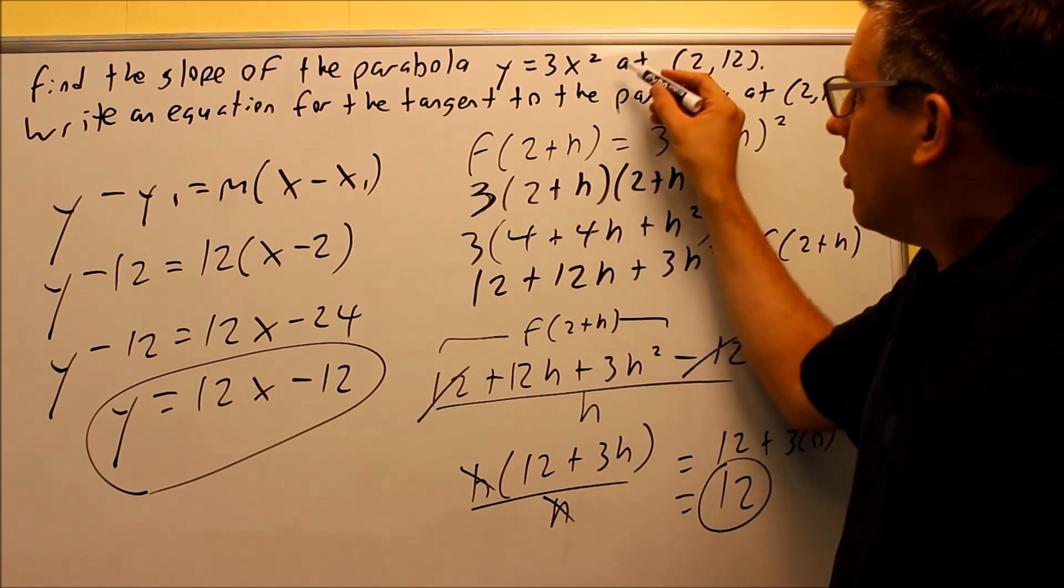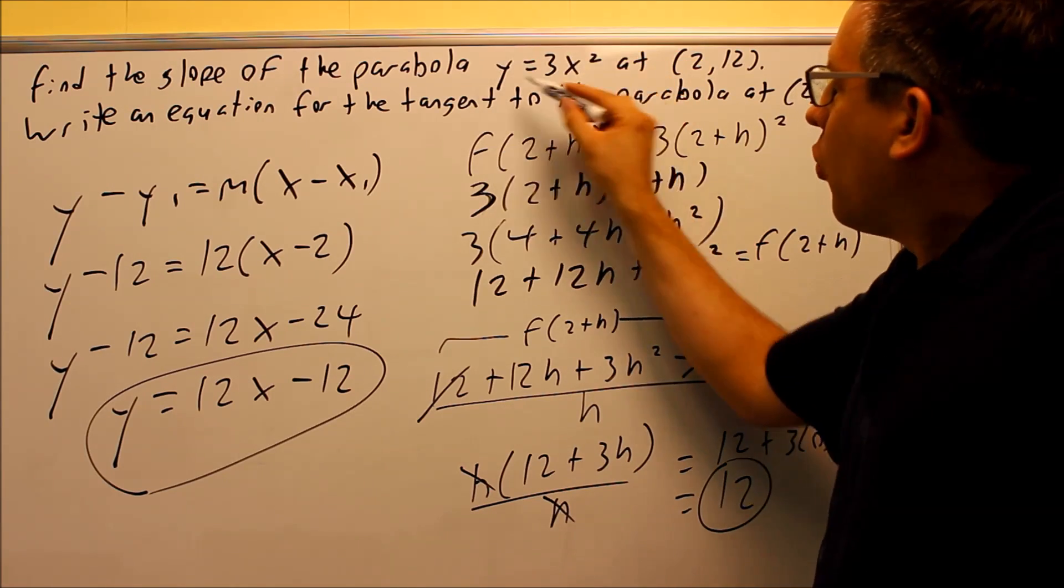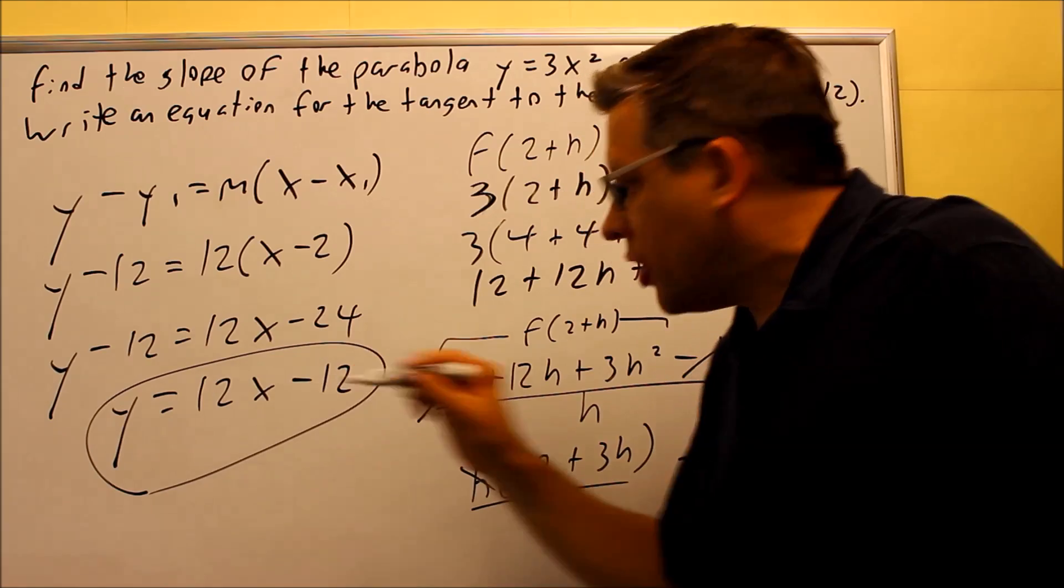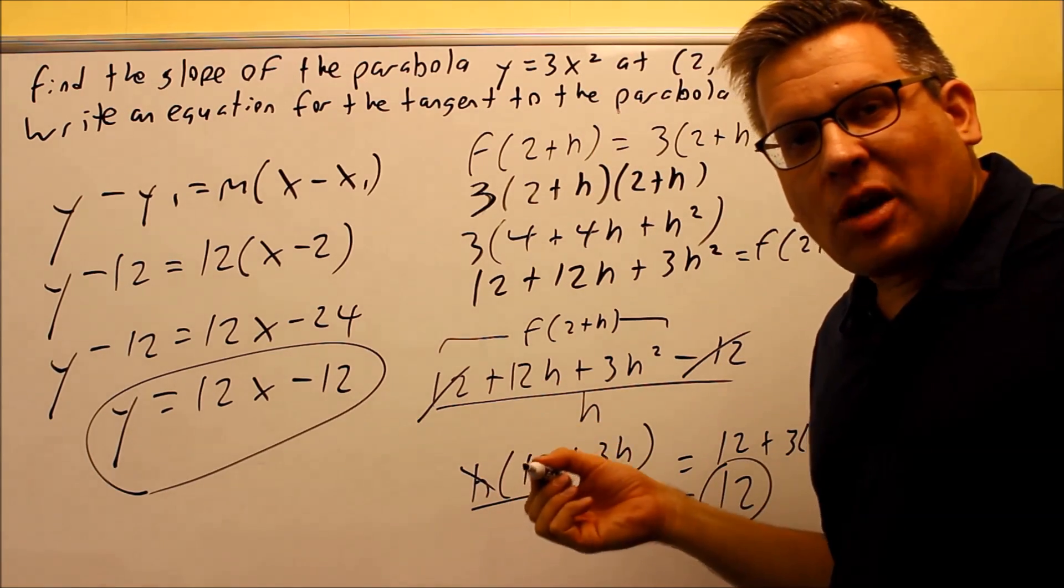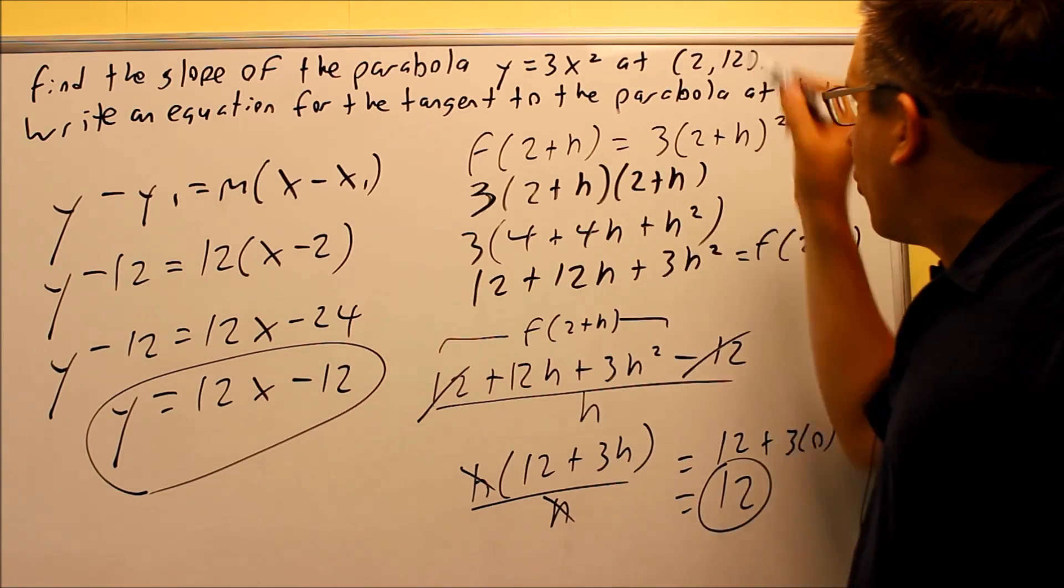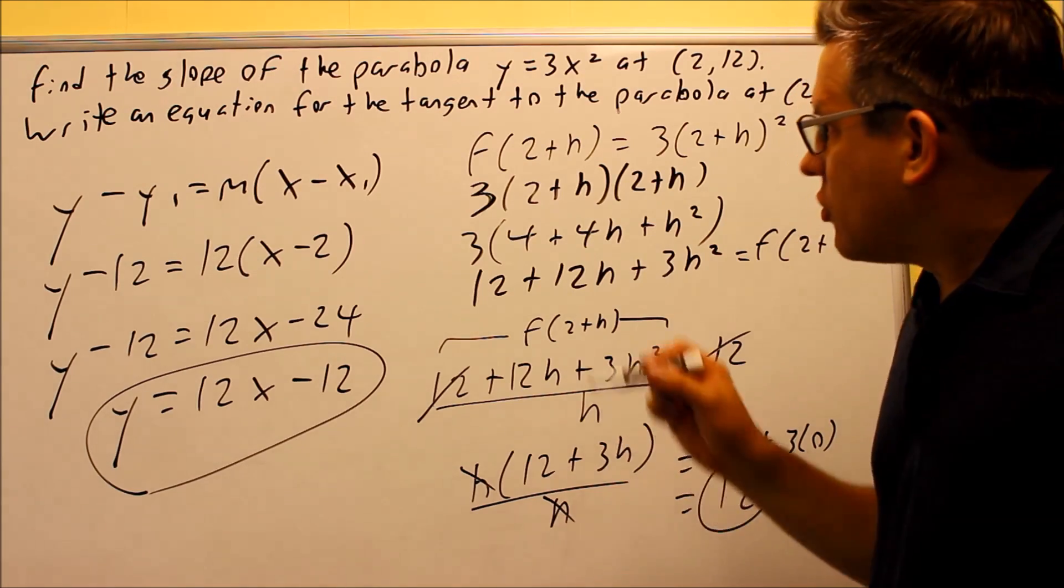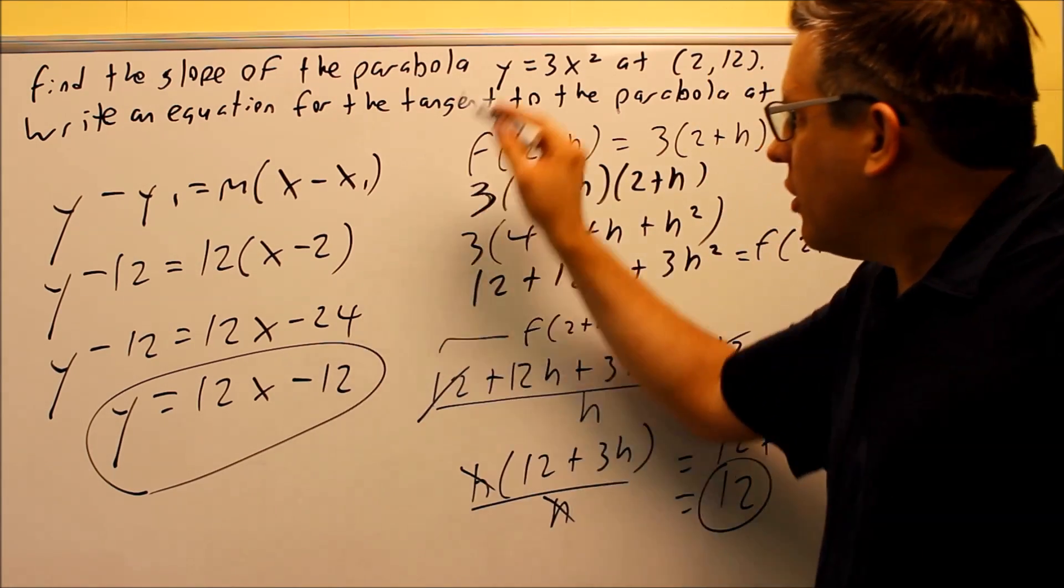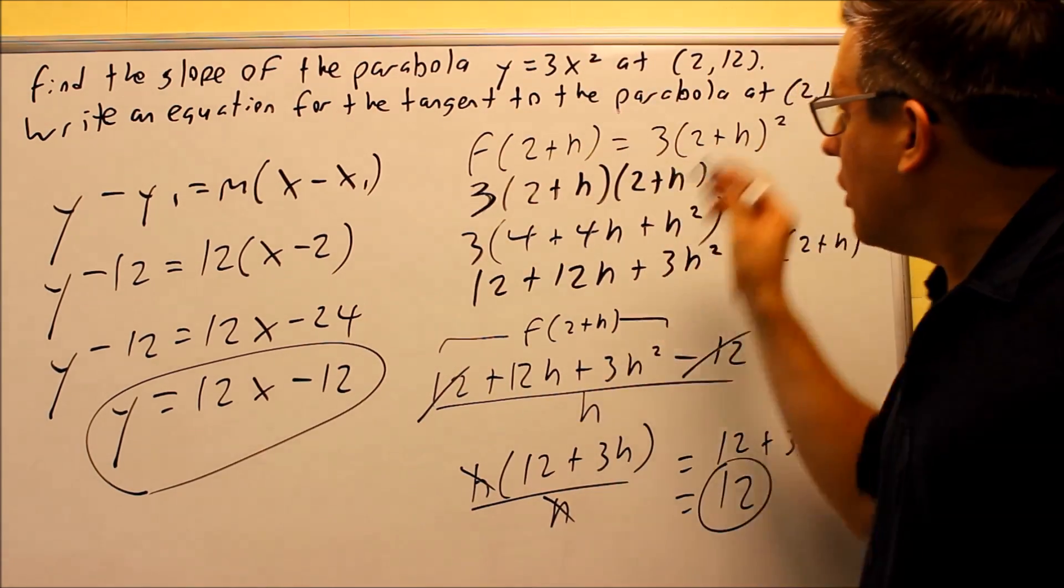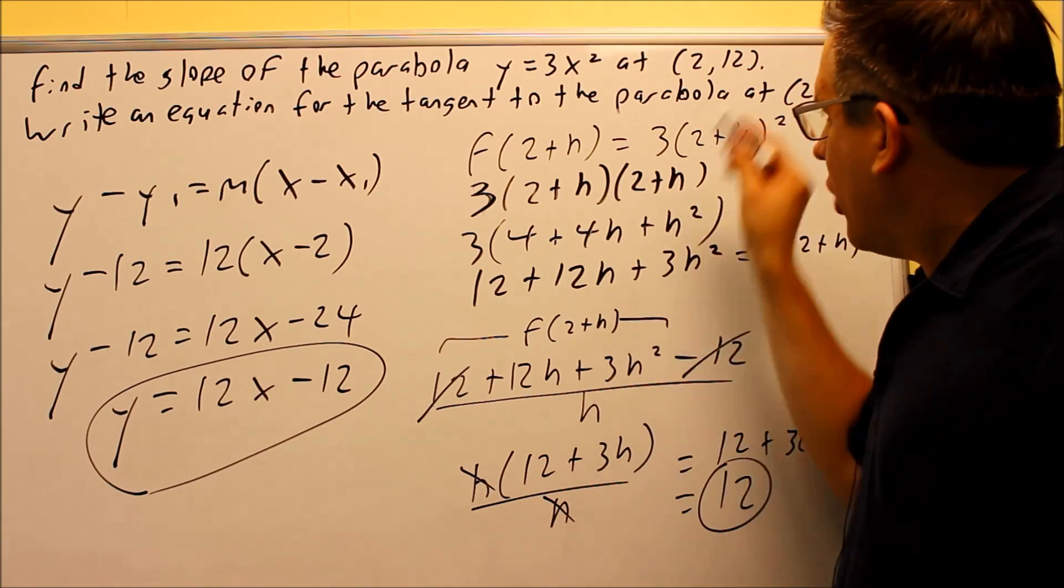So if you were to graph this one, y equals 3x squared, and you were to graph this one, you would see these two lines coming together at one spot. And that point would be 2, 12. You should see this line only hitting the parabola once, hitting it at that particular point at 2, 12.